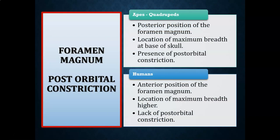The foramen magnum and postorbital constriction are cranial features we're going to look at when comparing apes versus humans. Apes are predominantly quadrupeds, so we're going to see a posterior or more toward the back position of the foramen magnum — the hole where the spinal column connects to the skull — and a presence of postorbital constriction. Bipeds or hominins are going to have a more anterior or directly underneath position of the foramen magnum, and postorbital constriction will decrease as cranial capacity expands, especially the expansion of the frontal region of the brain.